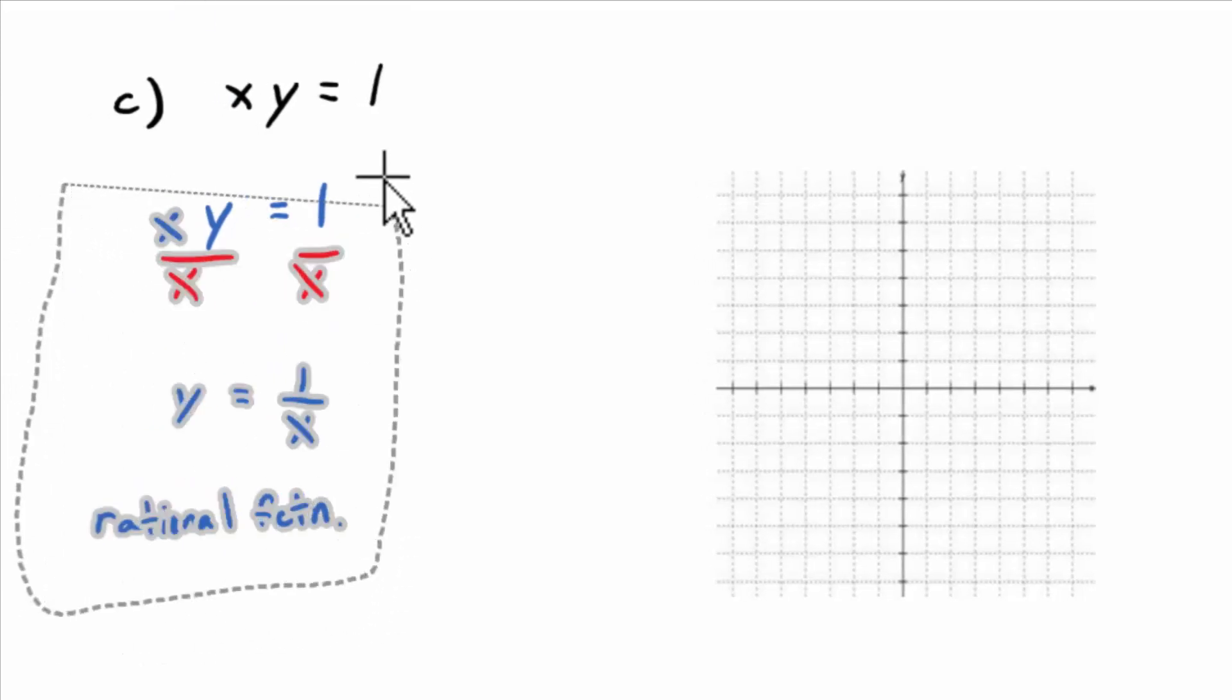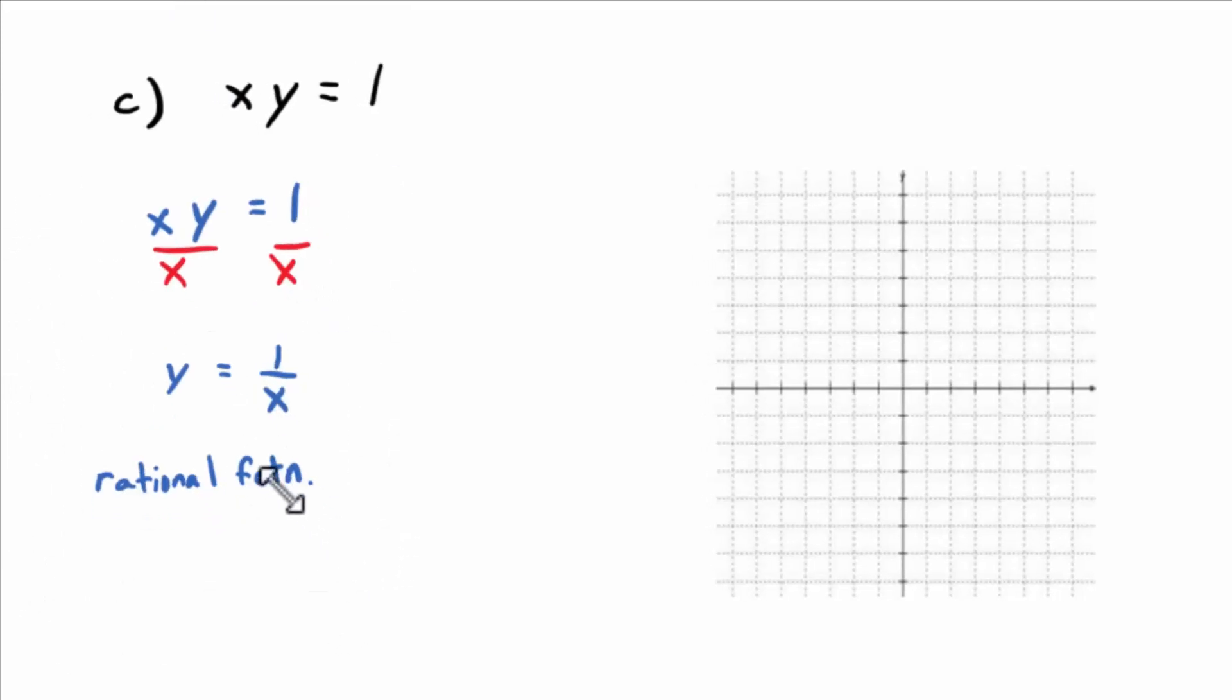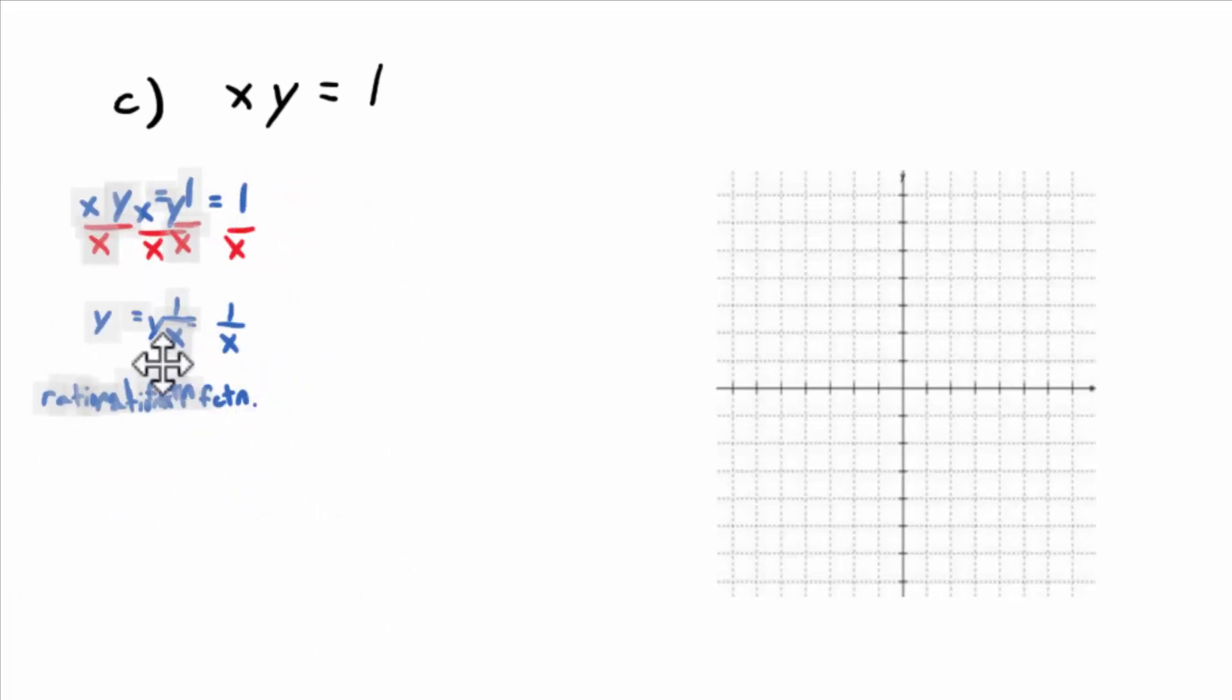Anyway, if it's a function, can't we just plot points? You know, go back to the old technique of creating a table. So x versus y, you bet. Now this is the simplest rational function you can ever think of. It's called the reciprocal function.